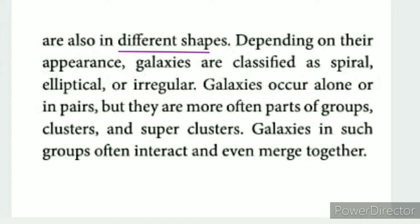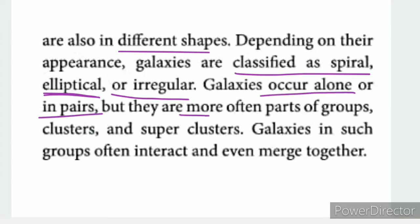Galaxies come in different shapes: spiral and elliptical. Galaxies can occur alone, in pairs, or in parts of groups.